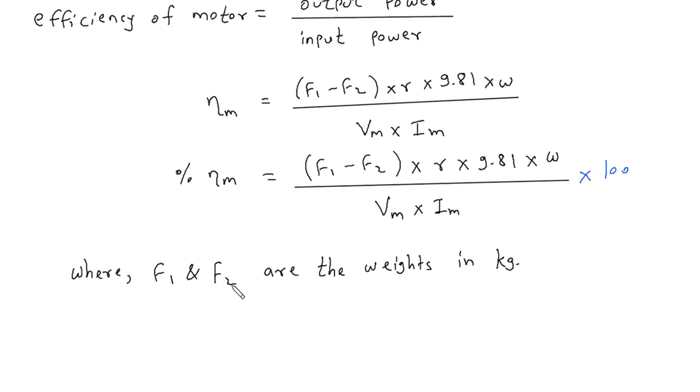Where F1 and F2 are weights in kilogram. And we can replace this ω by 2πN upon 60 radian per second.